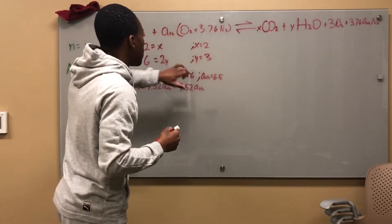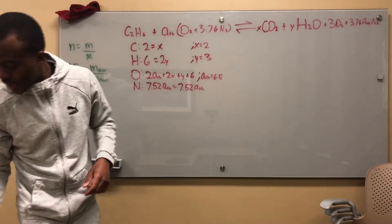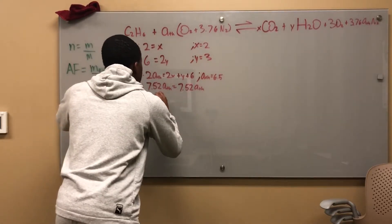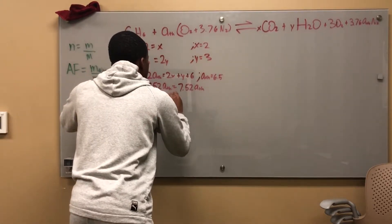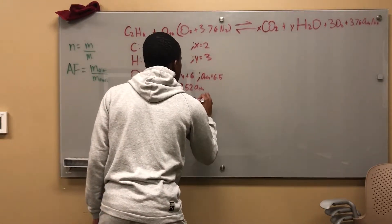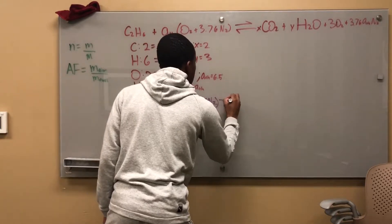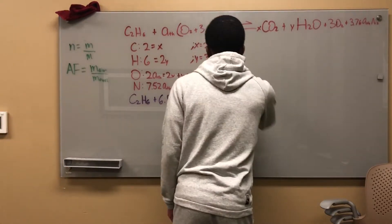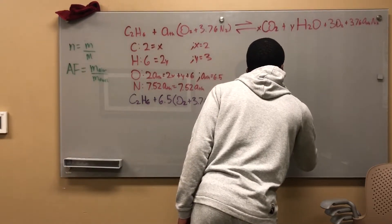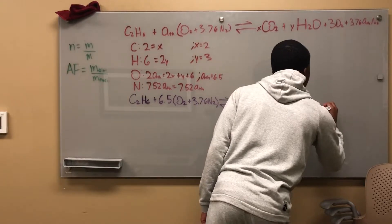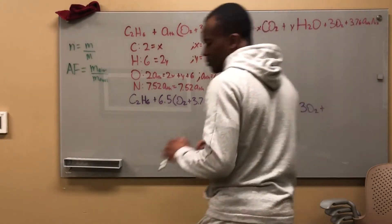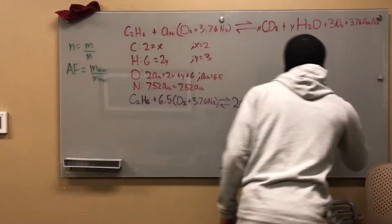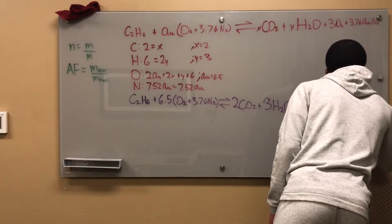So when I've solved for all of my unknowns, right, I can get that my new equation is C2H6 plus, I put in my ATH, 6.5 times O2 plus 3.76 N2. Once we react that, we get 2CO2 plus 3H2O plus 3O2 plus 3.76 times 6.5 is 24.44 N2.